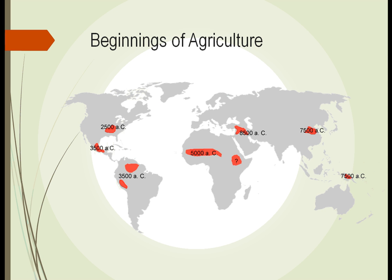We look here and we see the Fertile Crescent, 8,500 years ago. We think agriculture started over in China 7,500 years ago, and someplace in Africa, maybe even 10,000 years ago.